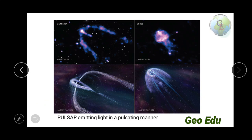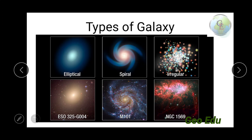This is a pulsar. The pulsar emits light in a pulsating manner — the lights move like this.